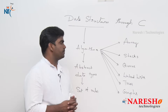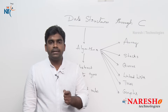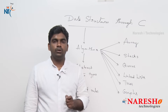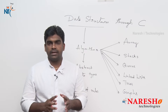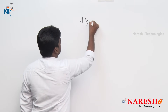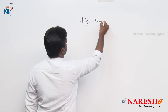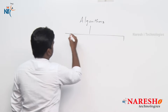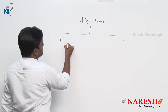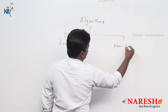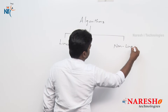Algorithms — that is, data structures — are divided into two types. The first type is linear data structures and the second type is non-linear data structures.